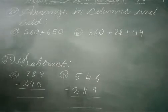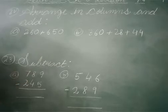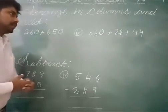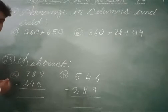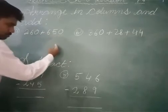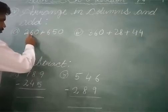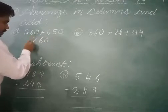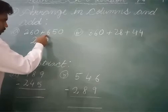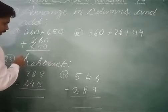The next type of problem is arrange in column and add and subtract. Subtraction is already arranged; for addition you have to arrange and then add. When arranging, the very important thing is to arrange from the right side. So for 260, we write 0, then 6, then 2. For 560, we write 0, 5, 6. Now we add.